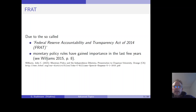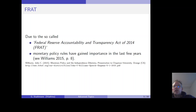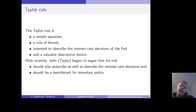Since this suggestion of an act, it is the case that monetary policy rules have gained importance in the last few years. The big question is whether central banks should be accountable for their monetary policy, and therefore it is very important to have a benchmark. We can then benchmark the actual policy of the central bank against the Taylor rule. The Taylor rule is a simple equation — a rule of thumb intended to describe the interest rate decisions of the Fed — and is a valuable descriptive device.